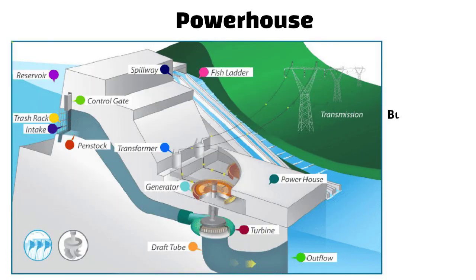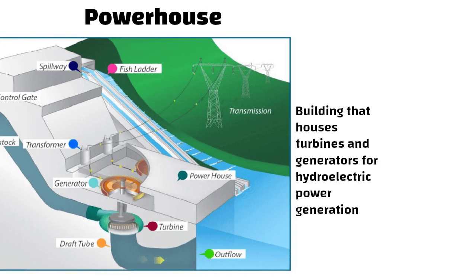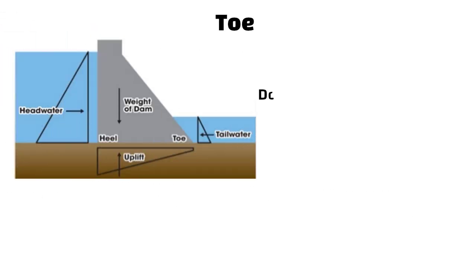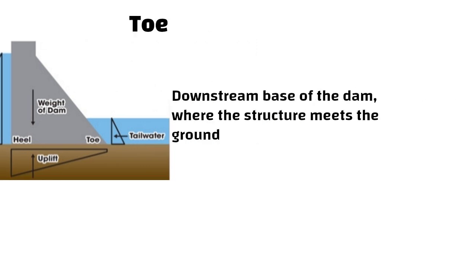Power house. Power house is the building that houses turbines and generators for hydroelectric power generation. Toe. Toe is the downstream base of the dam where the structure meets the ground.